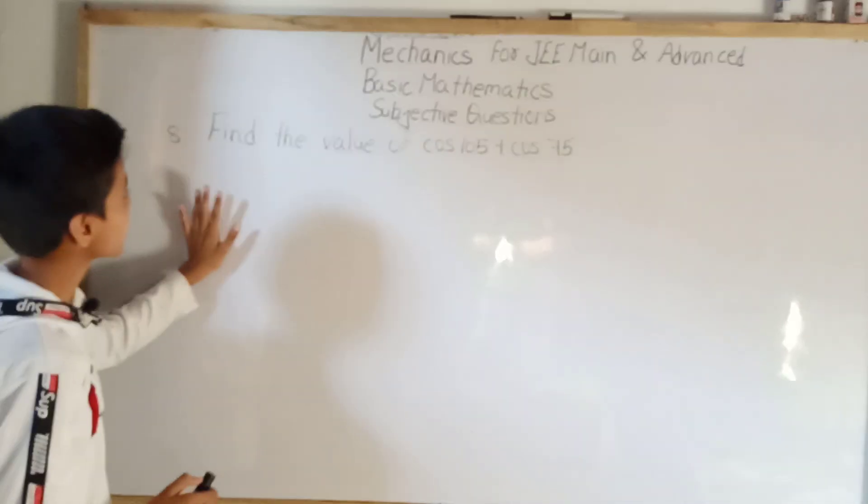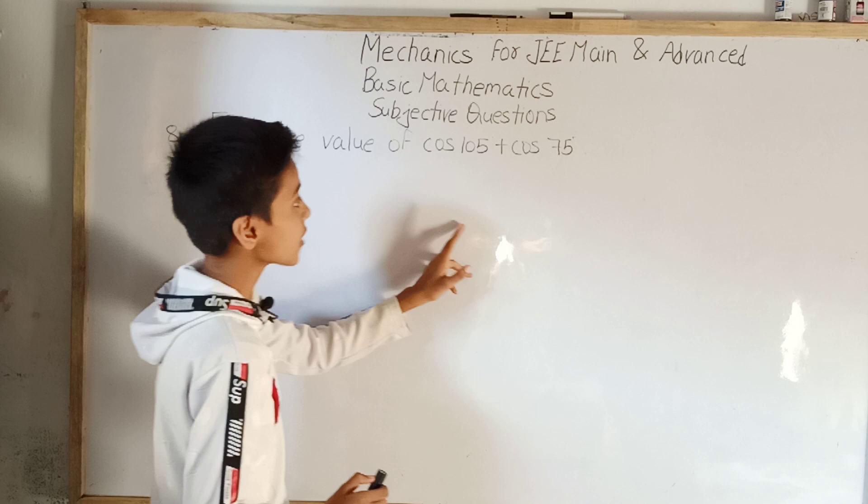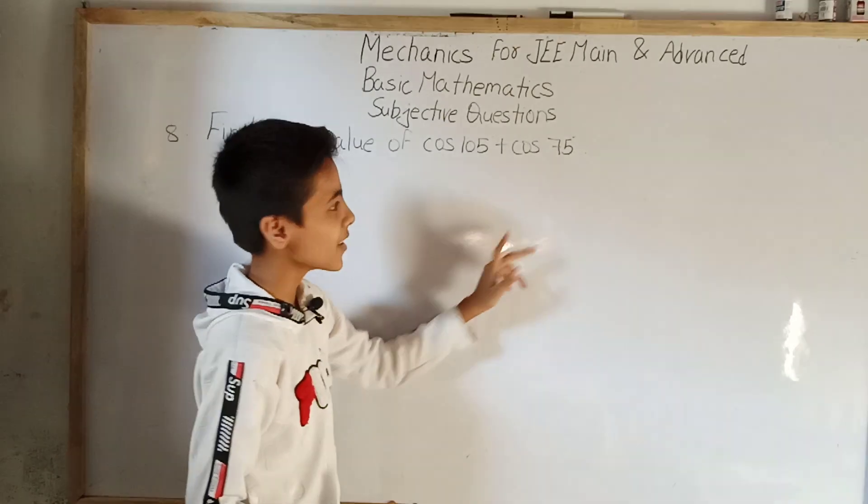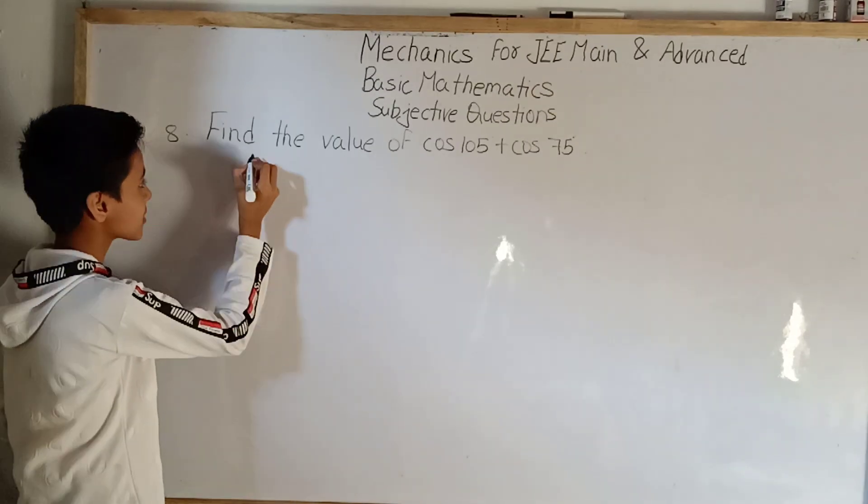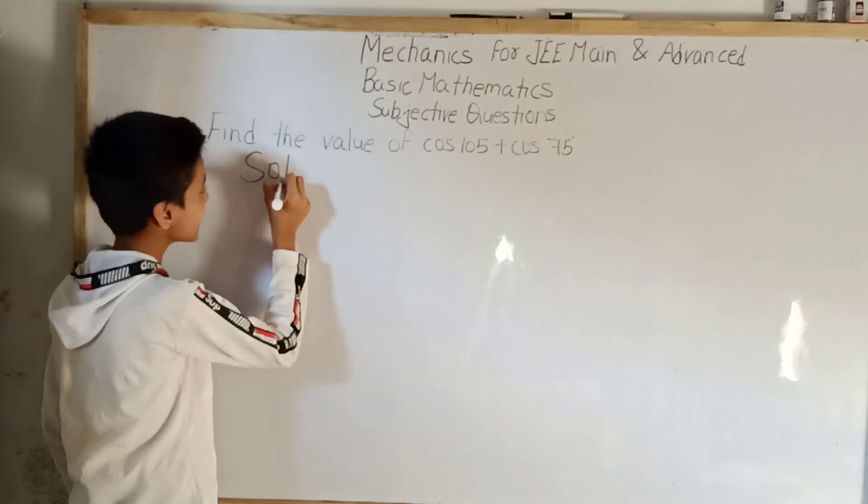As we know, question number 8 is find the value of cos 105 degree plus cos 75 degree. So we will solve this question number 8. Now let us start the solution.